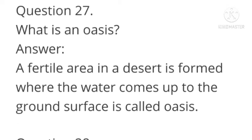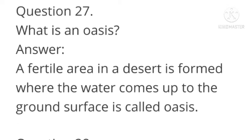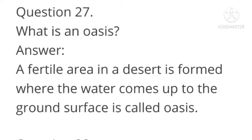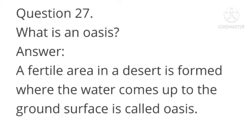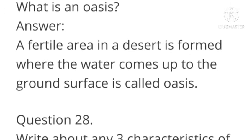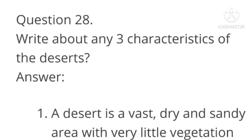Question number 27: What is an oasis? Answer: A fertile area in a desert, formed where the water comes up to the ground surface, is called an oasis.